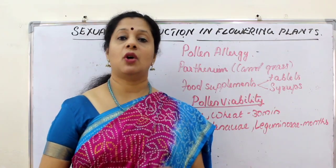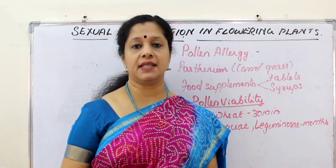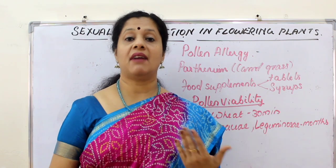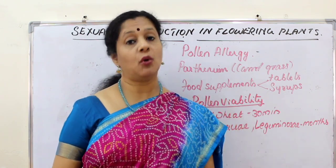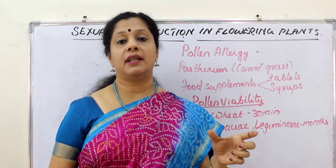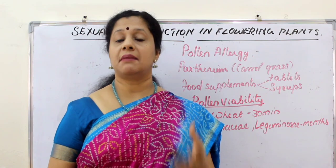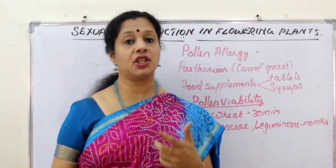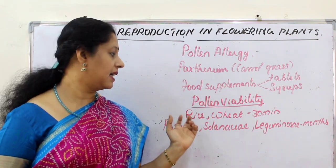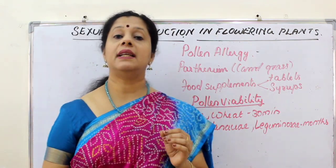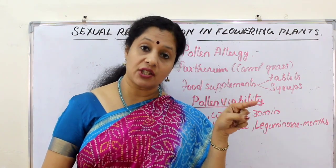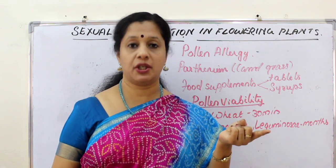Next we have to talk about pollen viability. Viability means, once the mature pollen is released from the anther, how long it can remain viable — able to grow a pollen tube or fertilize. That depends on the type of plant and climatic factors like temperature and humidity. It varies from plant to plant. For example, cereals like rice and wheat have only 30 minutes of viability.